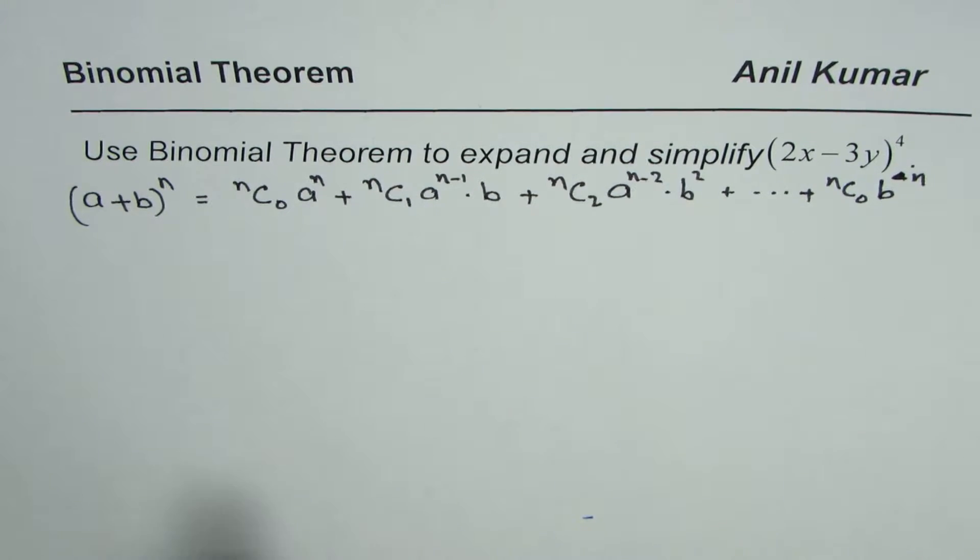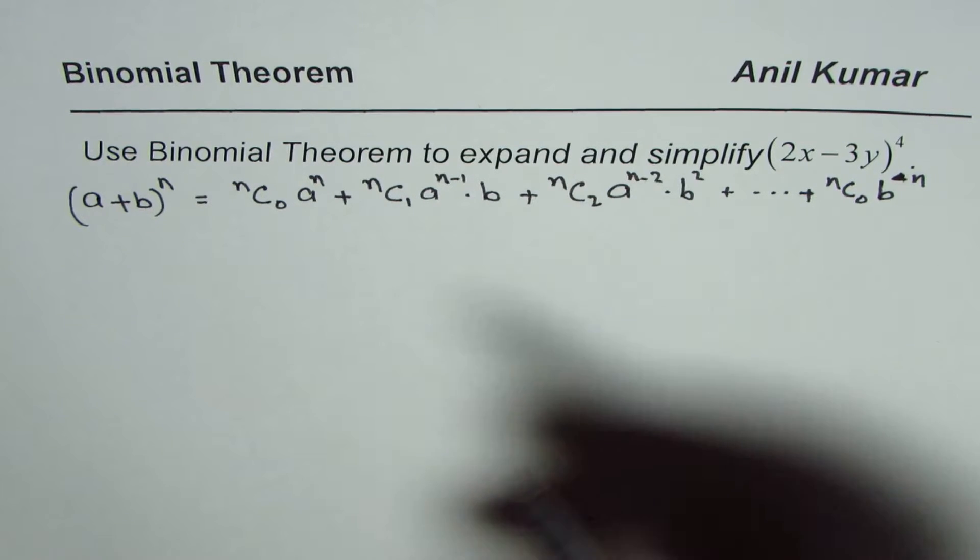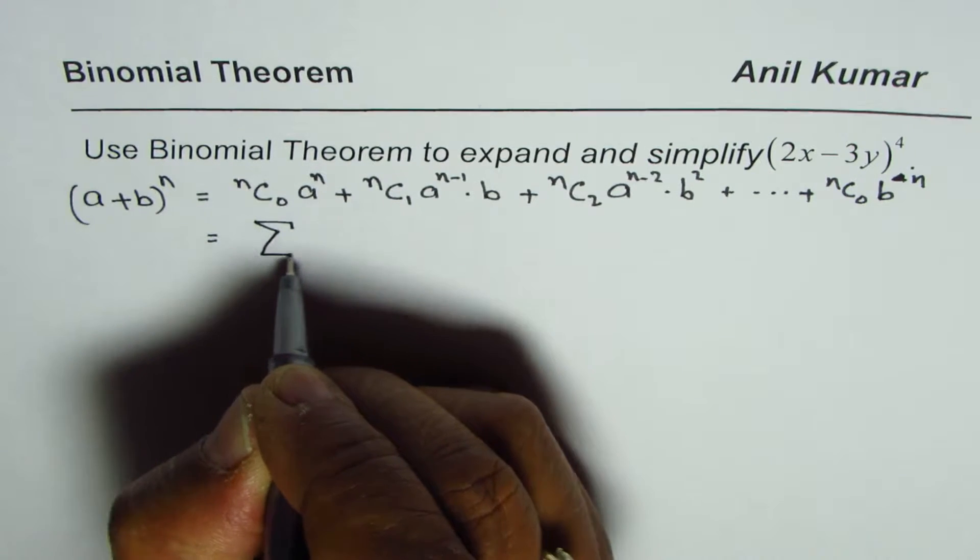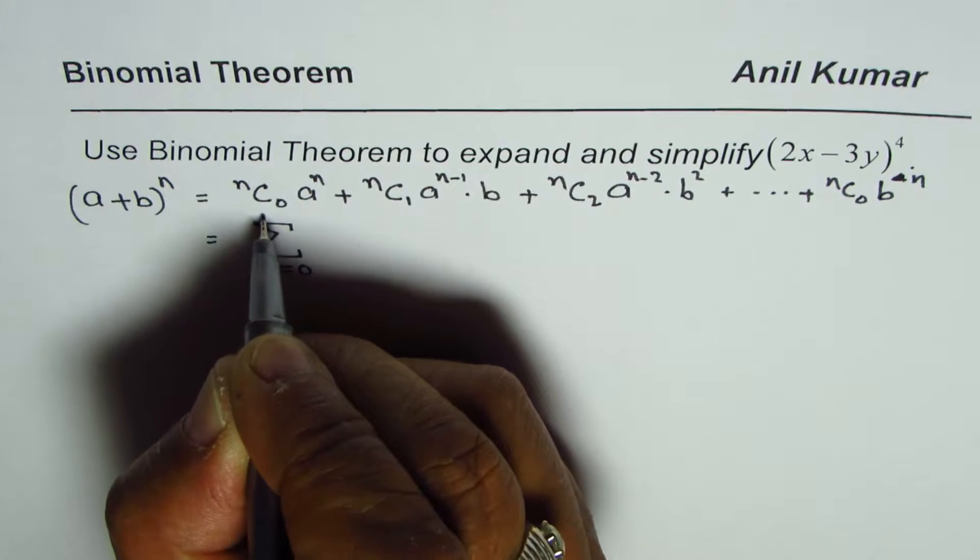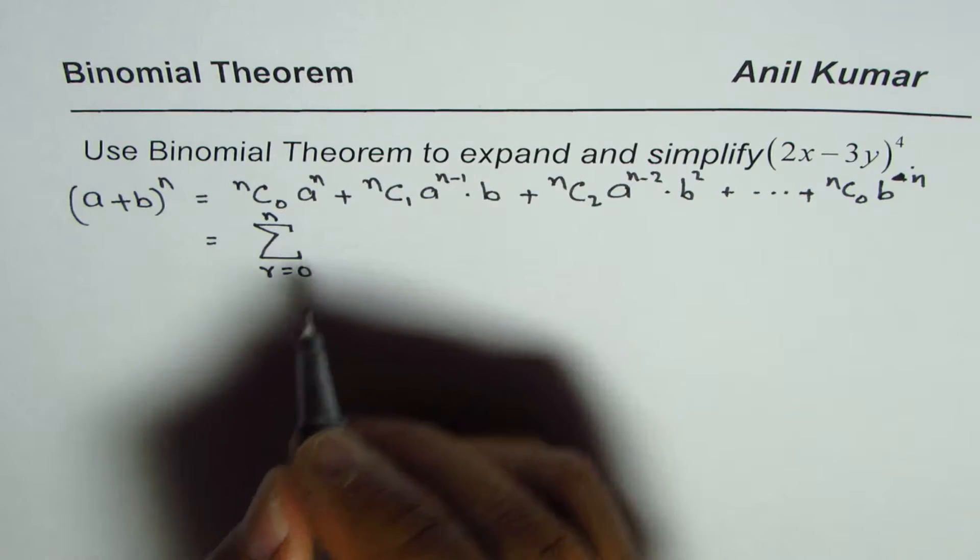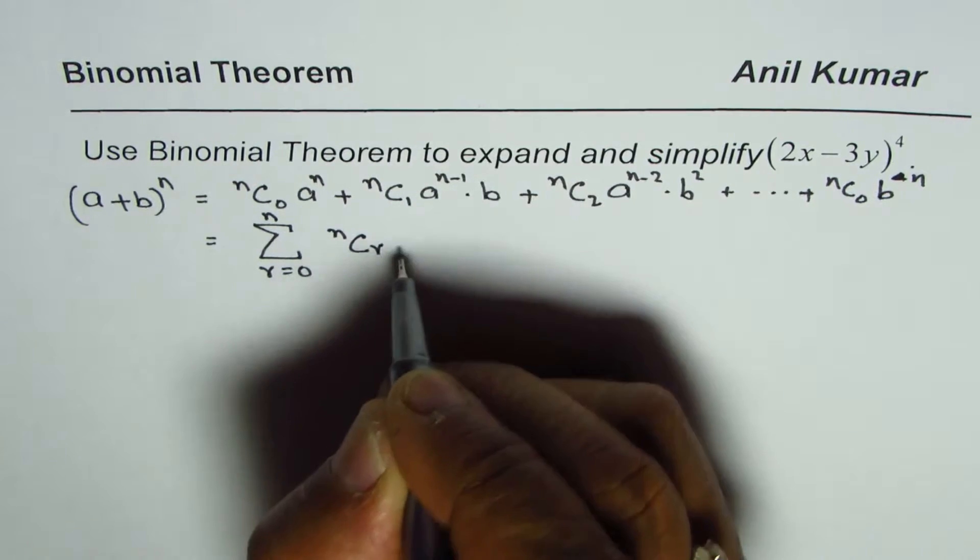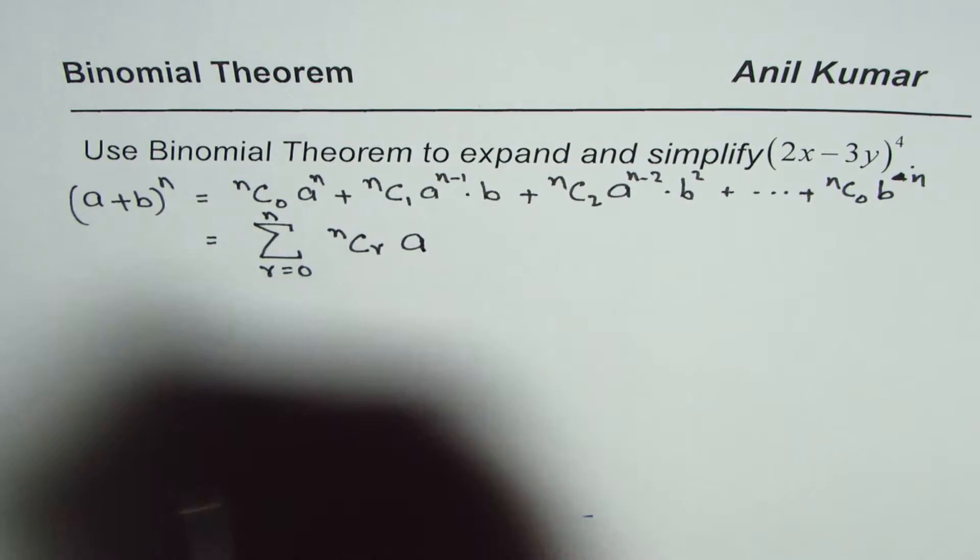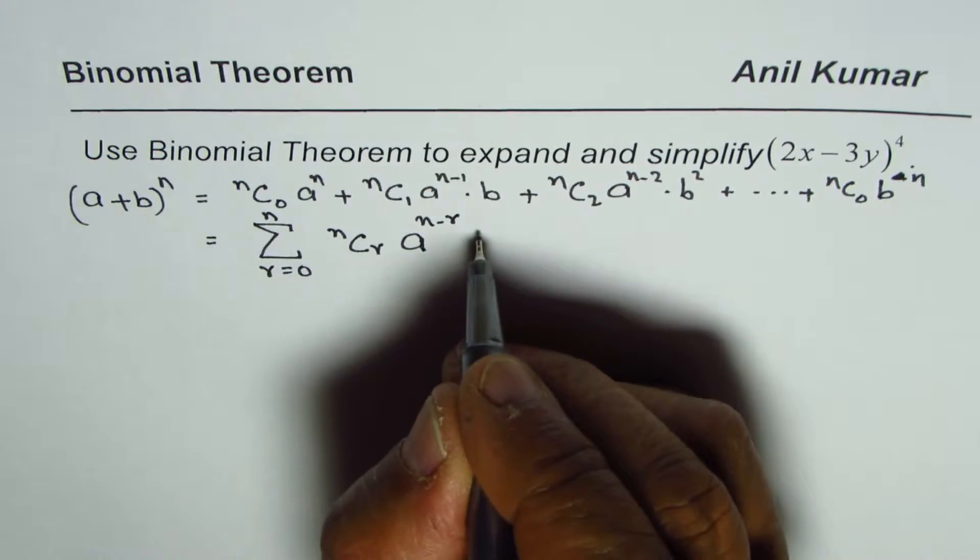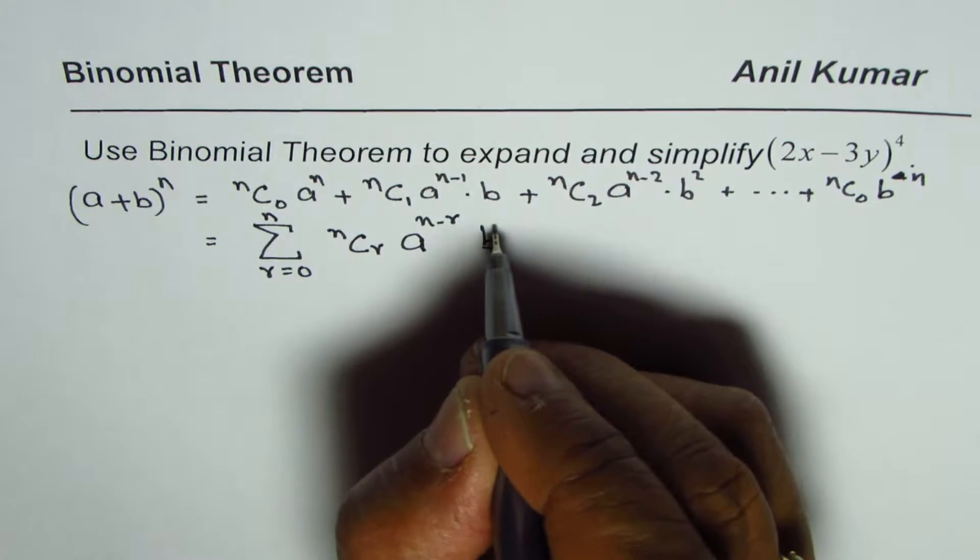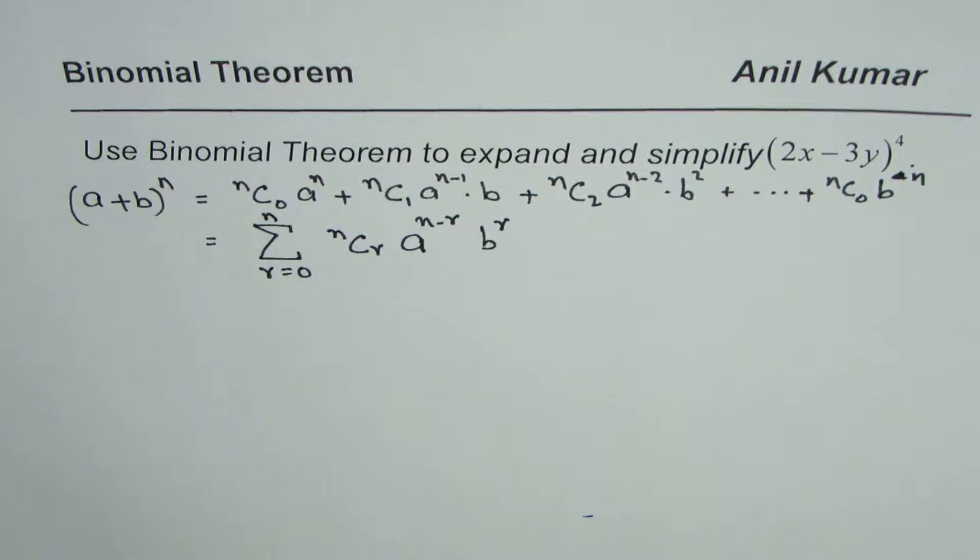That is how you could expand using binomial theorem. This could also be written in summation form where r equals from 0 to n and the terms will be nCr a to the power of n minus r and the second term to the exponent of r. That is the way the formula is used.